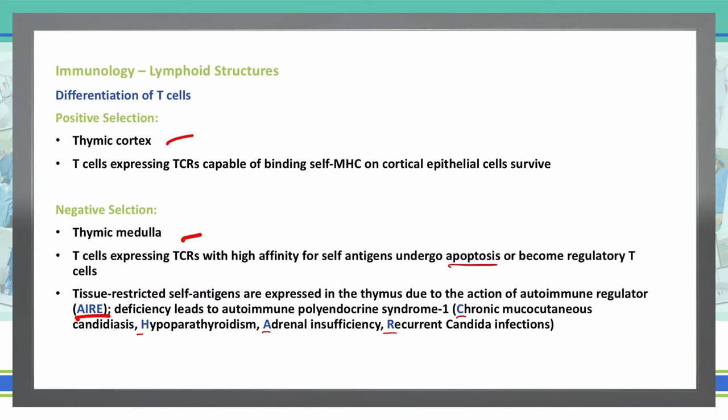So CHAR stands for chronic mucocutaneous candidiasis, hypoparathyroidism, adrenal insufficiency, and recurrent candida infections. The mnemonic is: without AIRE, your body will CHAR. AIRE is our autoimmune regulator, and CHAR represents the symptoms associated with autoimmune polyendocrine syndrome.